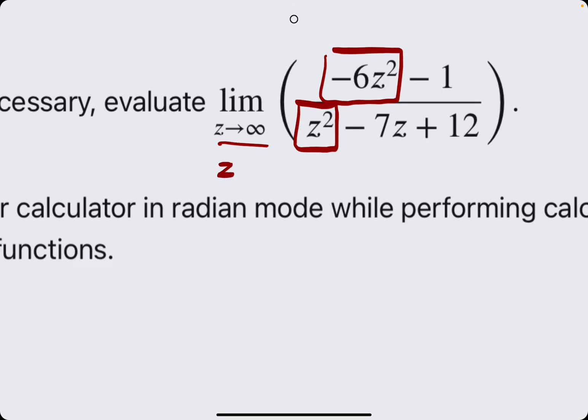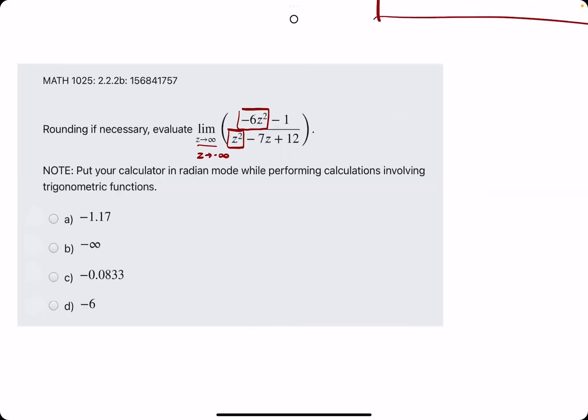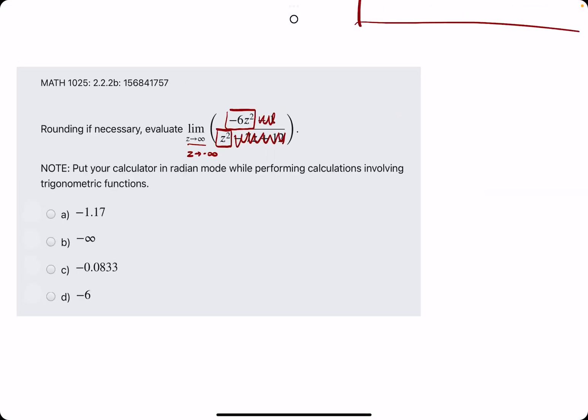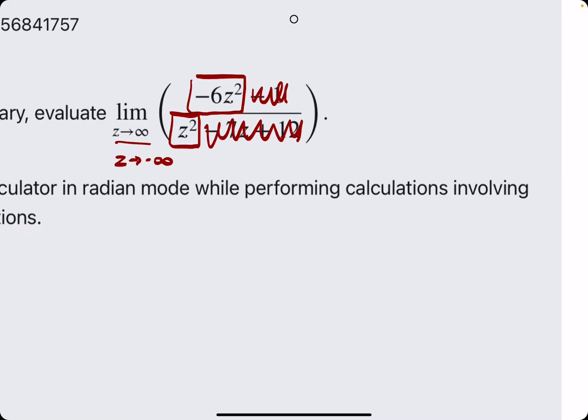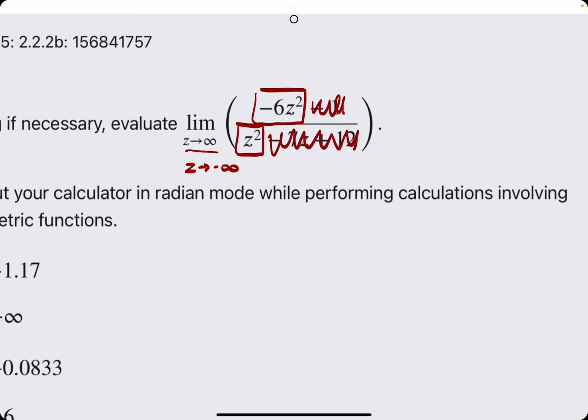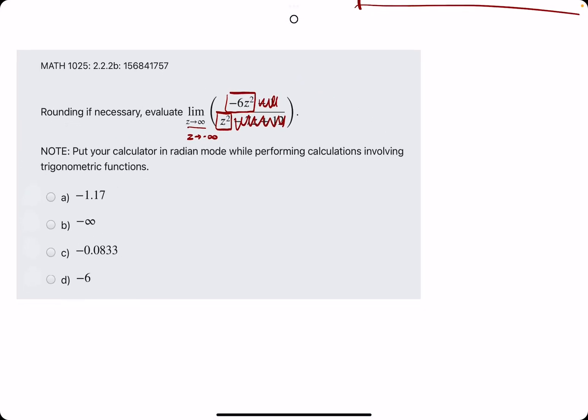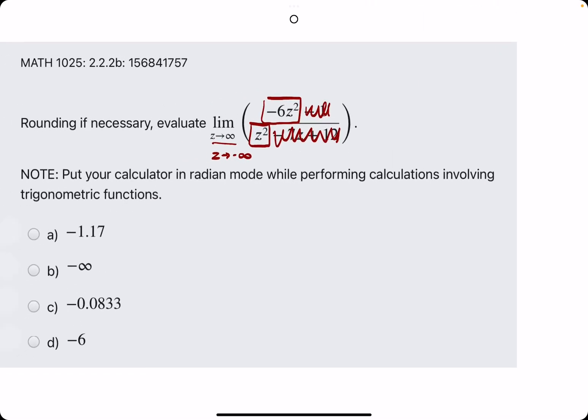It all comes down to the highest exponent terms on top and on bottom when we're dealing with either infinity or negative infinity. So what we can do is basically neglect all these other terms, and we're trying to wrap our heads around what to do with negative six z squared over z squared in this case, because z squared is the highest exponent on top and z squared is the highest degree term on the bottom.